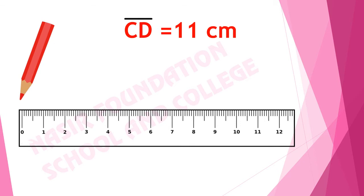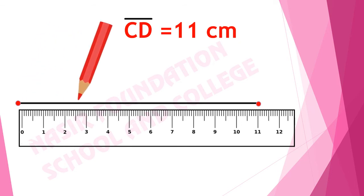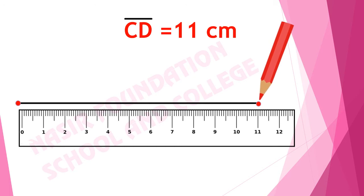Now we will draw line segment CD of eleven centimeter. To draw a line segment, we place the scale and mark a starting point at zero centimeter, and then we join it with the help of a pencil. We will mark the starting point as C and ending point as D. This is line segment CD of eleven centimeter.